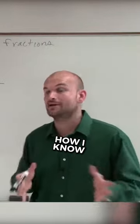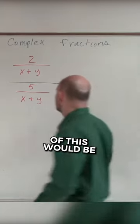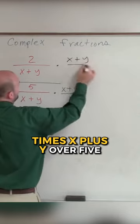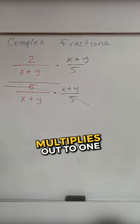But let me show you how I know that's going to be 2 fifths. So we could always multiply by the reciprocal of this, which would be x plus y over 5. We know that any fraction multiplied by its reciprocal multiplies out to 1.